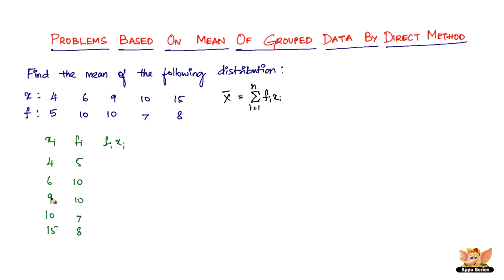The summation goes from 1 to n, which is 5 in this case. Sum them all up and divide by capital N, which is the sum of the frequencies. That's why we're calculating f_i times x_i.